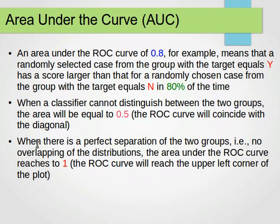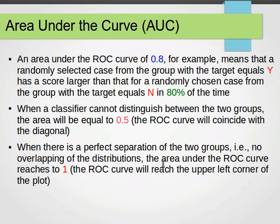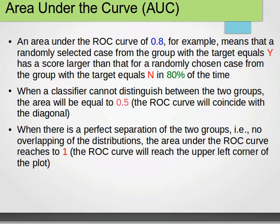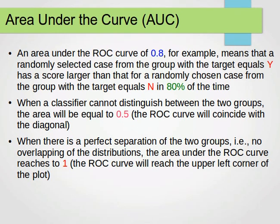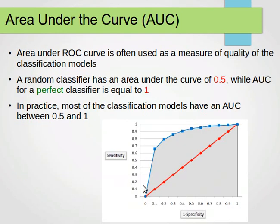And if there is a perfect separation between the two groups, no overlap of the distributions, the area under the curve will be 1. So, the ROC curve will reach the upper left corner. The ROC curve will go through the 0 and 1 point. So, it goes like that. I hope this makes sense.